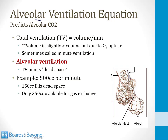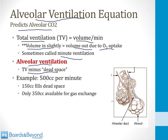Now let's move to the alveolar ventilation equation, a classic equation used to predict the alveolar carbon dioxide level. Total ventilation — also called minute ventilation — is the volume per minute of air moving in and out. Alveolar ventilation is total ventilation minus dead space ventilation. For example, if 500 cc per minute moves in and out, but 150 cc fills dead space, then alveolar ventilation is only 350 cc's — the ventilation available for gas exchange.